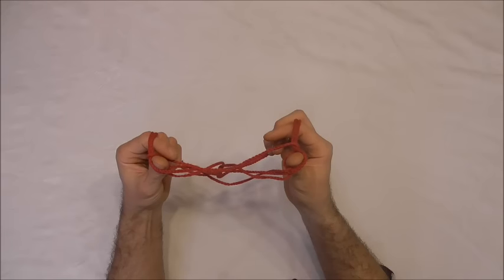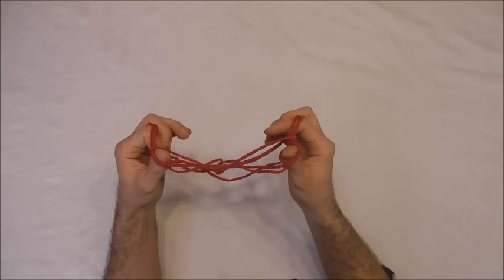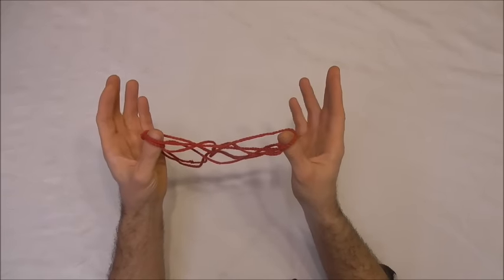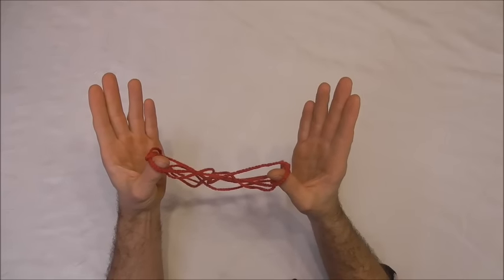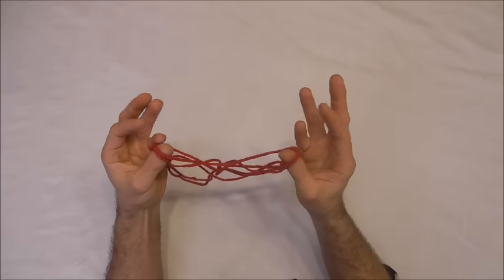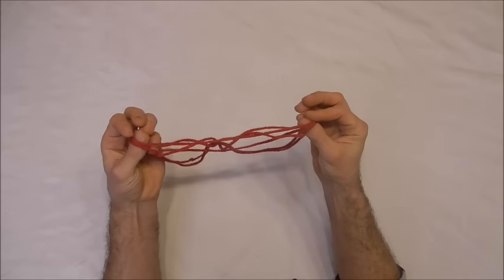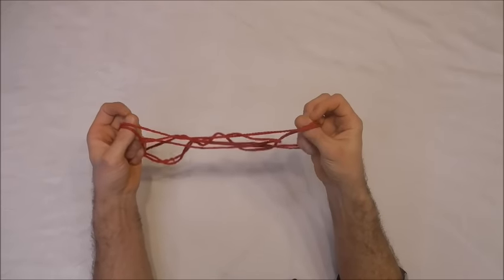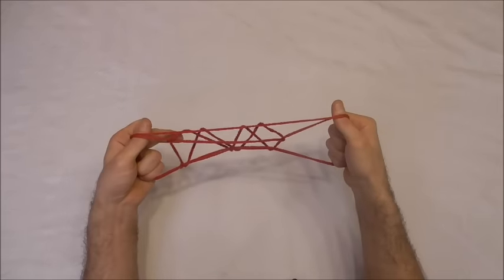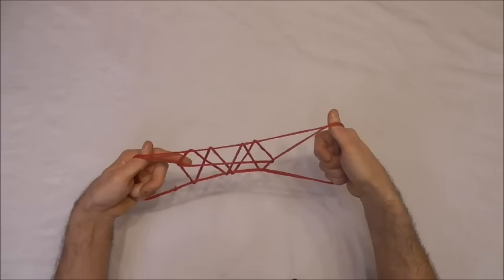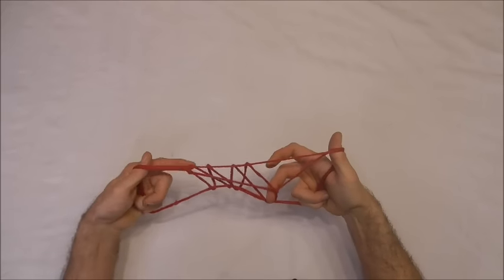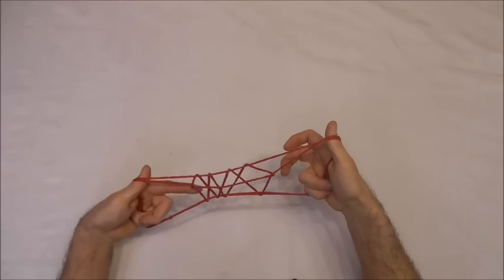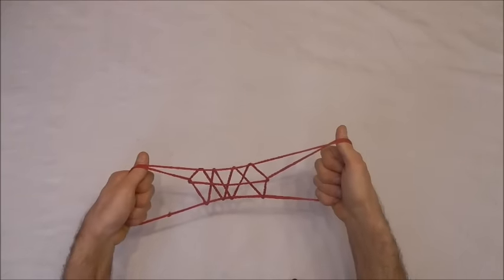Next I just want to release all of my fingers and just have those loops on my thumbs. Then with my four fingers - pointer finger, middle finger, ring finger and little finger - I want to insert them all into my thumb loops and then pull the fingers apart and with a little bit of manipulation you should get your finished figure.